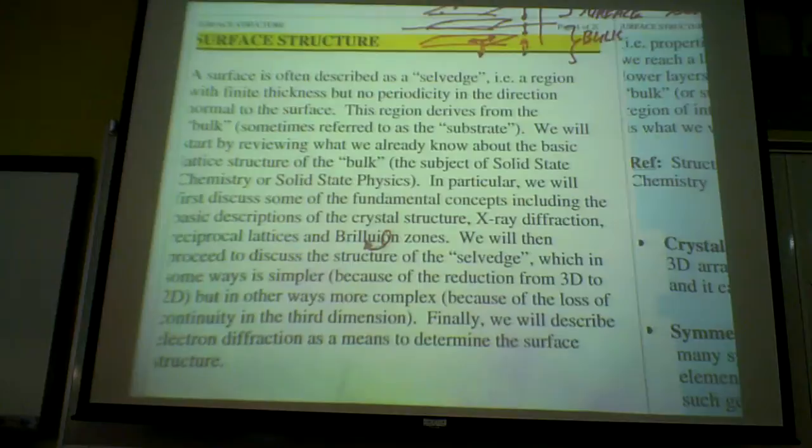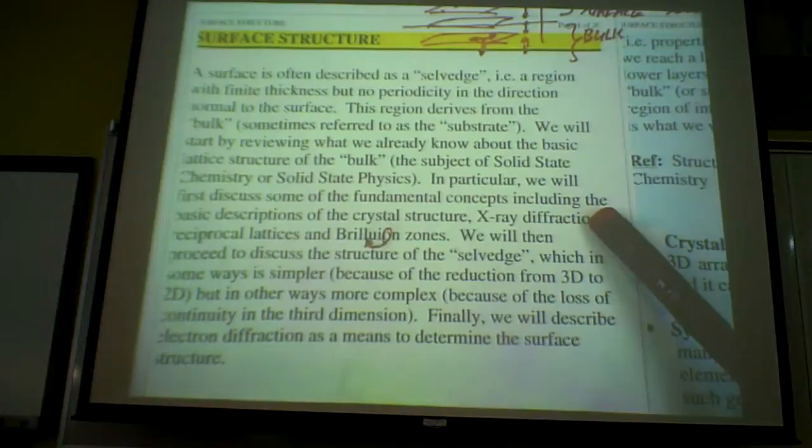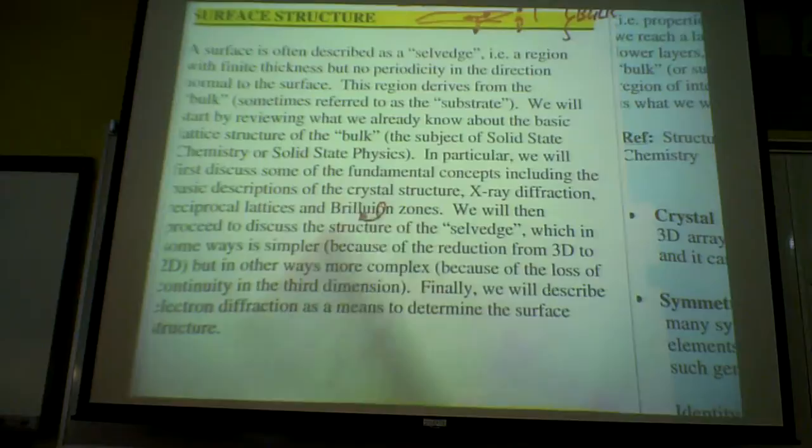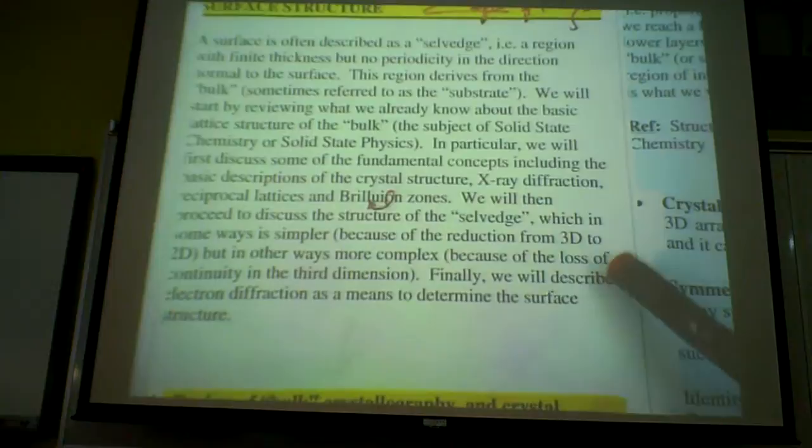We will first focus on fundamental concepts, including basic description of crystal structure, x-ray diffraction, this is a technique commonly used to determine the crystal structure, reciprocal space lattice, reciprocal lattice, and Brillouin zones. Brillouin is spelled wrong, it should be B-R-I-L-L-O-U-I-N. Somewhat difficult concepts, but we will try to explain to you what they are.